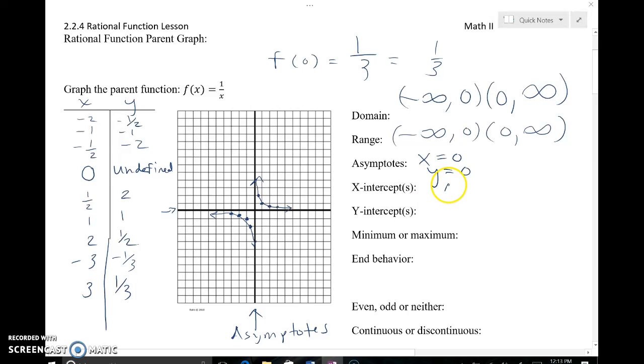I don't have any x-intercepts because I don't actually touch the x-axis, and I don't have any y-intercepts because I don't actually touch the y-axis. I don't have a maximum or a minimum value, as I continue to go up and down without any boundaries.